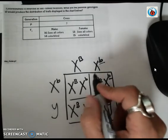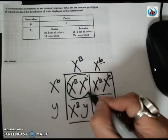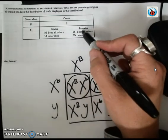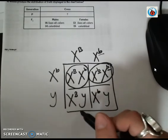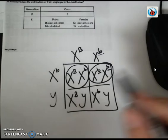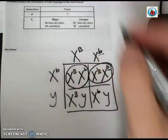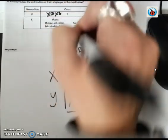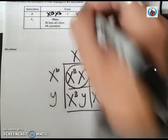You can see how for females, seeing all colors to colorblind is a one-to-one ratio, about half and half. And then the same thing for males, seeing all colors or colorblind, is about a one-to-one ratio, or half and half. So the cross that made these offspring would be a heterozygous mom with a colorblind dad.